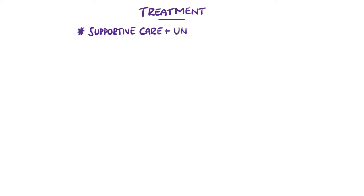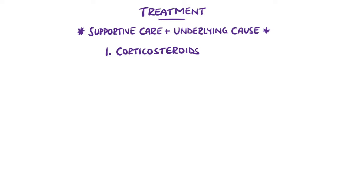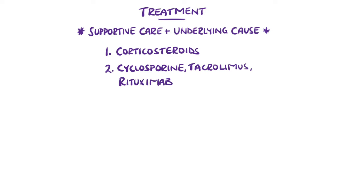Treatment involves supportive care as well as treatment of the underlying cause. Steroids are used in most cases as there is usually an immune component, and in severe cases other immunosuppressants like cyclosporine, tacrolimus, or even rituximab — which is an anti-CD20 monoclonal antibody. ACE inhibitors and angiotensin receptor blockers are given as they can help reduce hypertension by interrupting the renin-angiotensin-aldosterone system, and also help to reduce proteinuria.